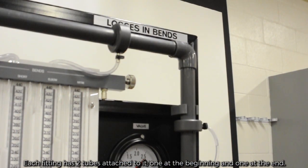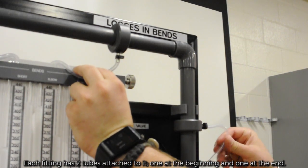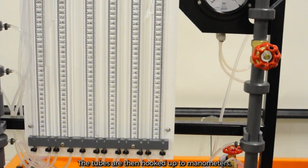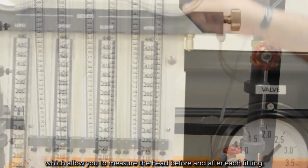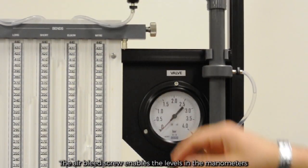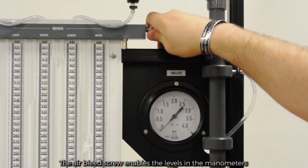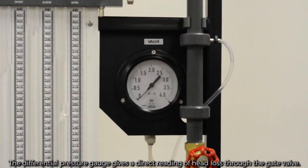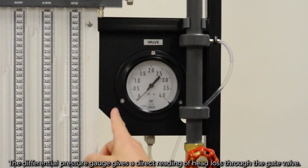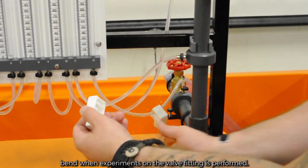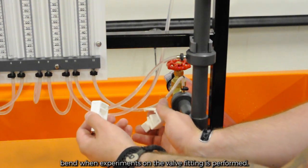Each fitting has two tubes attached to it, one at the beginning and one at the end. The tubes are then hooked up to manometers, which allow you to measure the head before and after each fitting. The air bleed screw enables the levels in the manometers to be adjusted to a convenient level for reading. The differential pressure gauge gives a direct reading of head loss through the gate valve. Two clamps are used to close off the tappings to the miter bin when experiments on the valve fitting are performed.